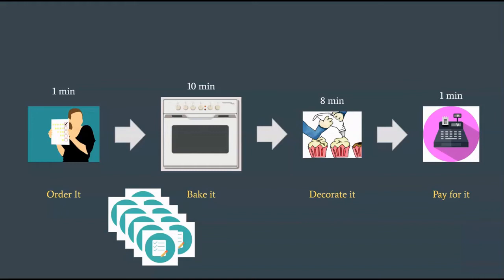Another way to identify the constraint is if you see a pile of work needing to be done before the step. In this case, there's a long list of work to be done before the baking step, so that kind of points to baking being the constraint. Whenever you see things pile up in front like that, there is a waste in one form or another. It could be considered a waste of the customer's time waiting for the order to complete — they might decide to cancel the order if it takes too long. It could be considered a waste for the bakery, because you could be producing more cakes instead. Either way, it's a waste. Your system cannot go faster than your constraints, so in the best case scenario, your bakery will never produce more than one cake every 10 minutes.